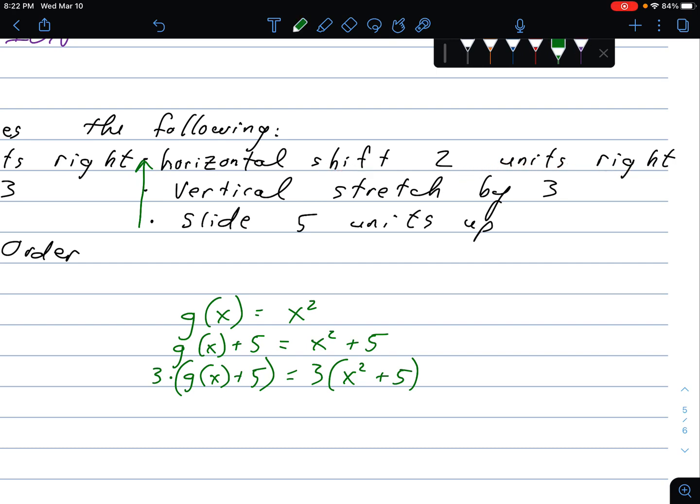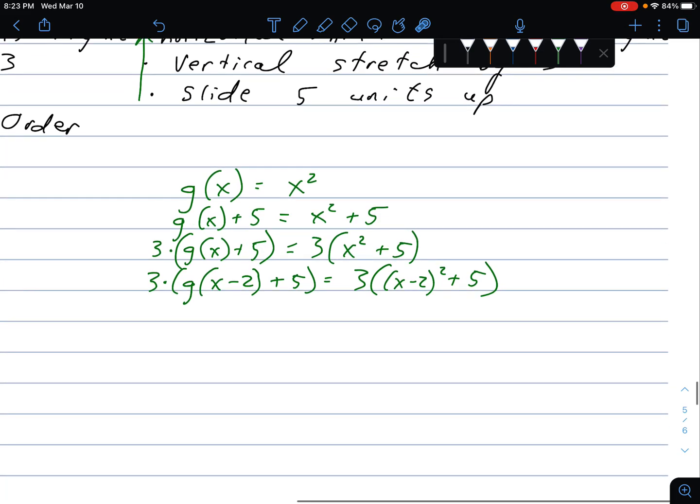And then our last one is horizontally shift two units to the right. Horizontal. That means internal, which means opposite of what I would expect, which means, as we saw, to the right, I think it's positive, which means negative. And here's my 3(x minus 2)² plus 5. So we can already see this definitely looks a little different. But is it going to come out differently? I don't know. Let's see. And the key difference was I vertically stretched it by three after already sliding it up by five.